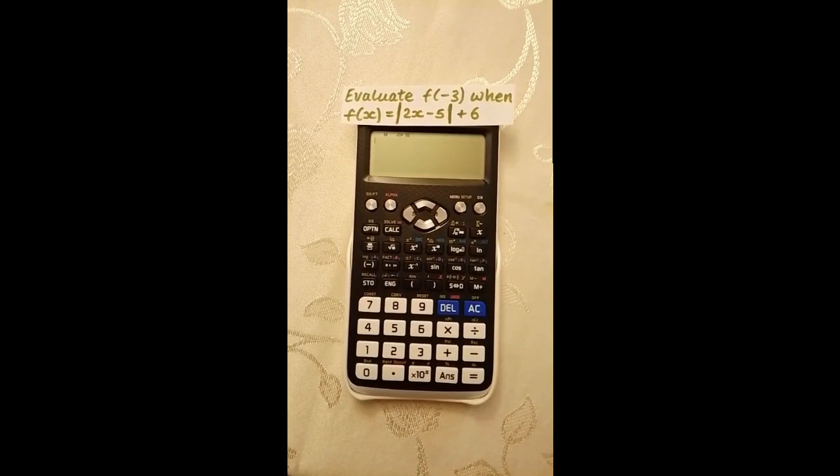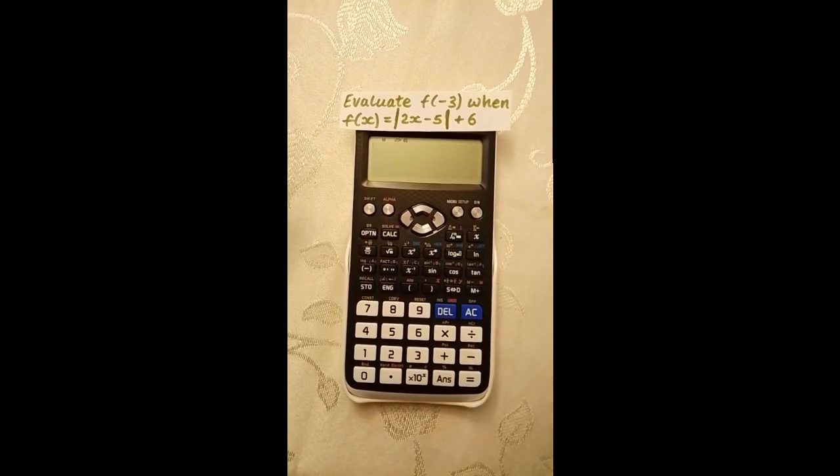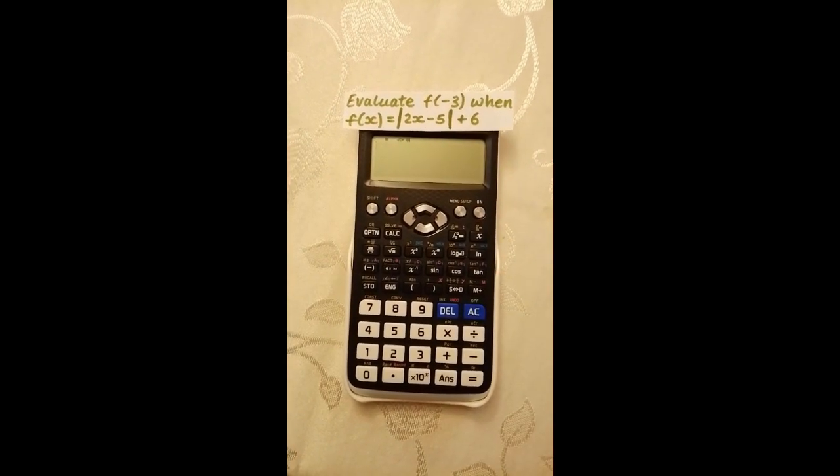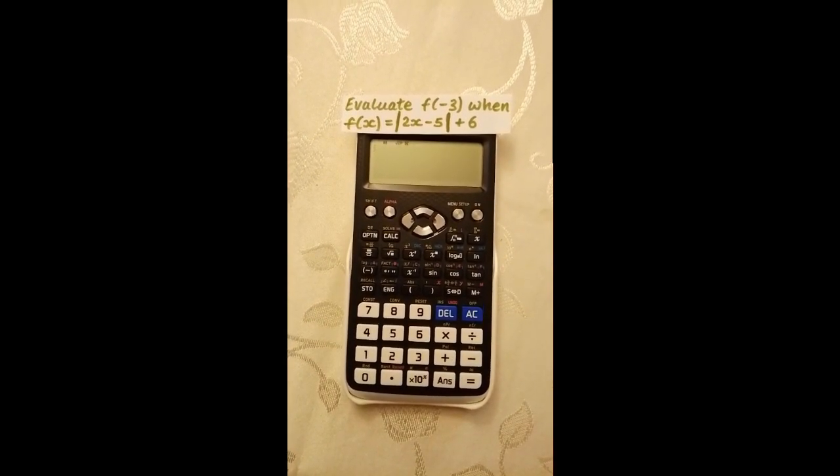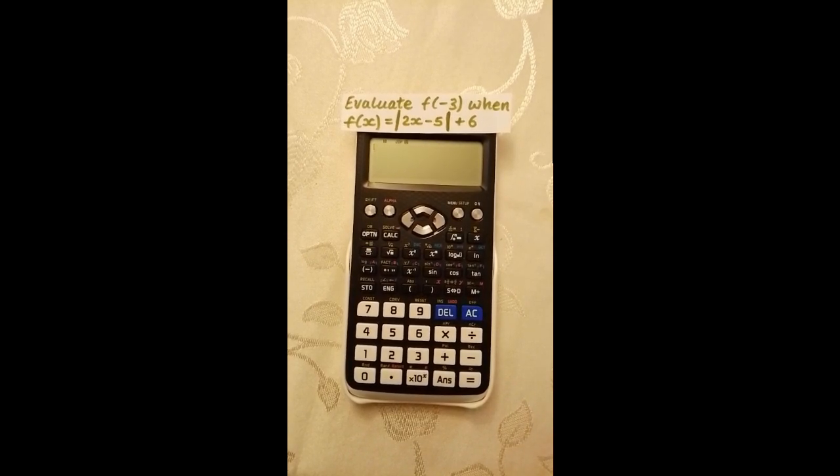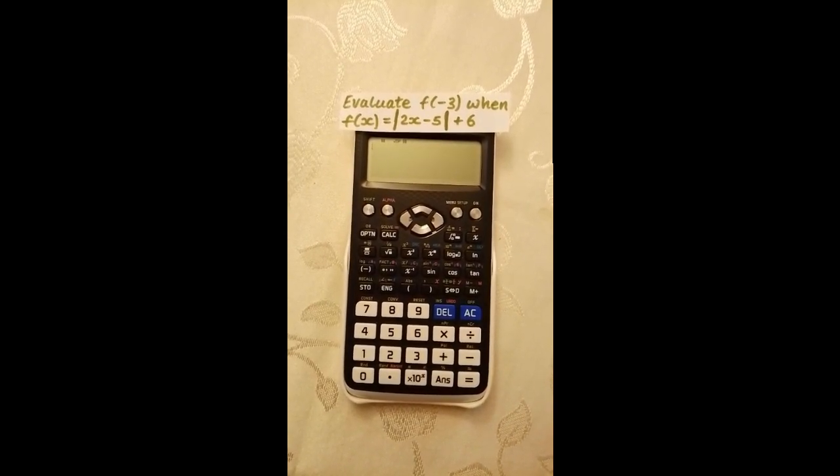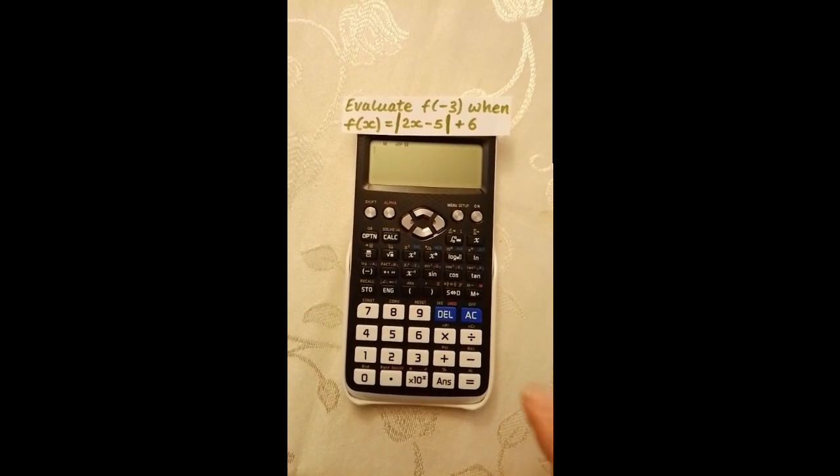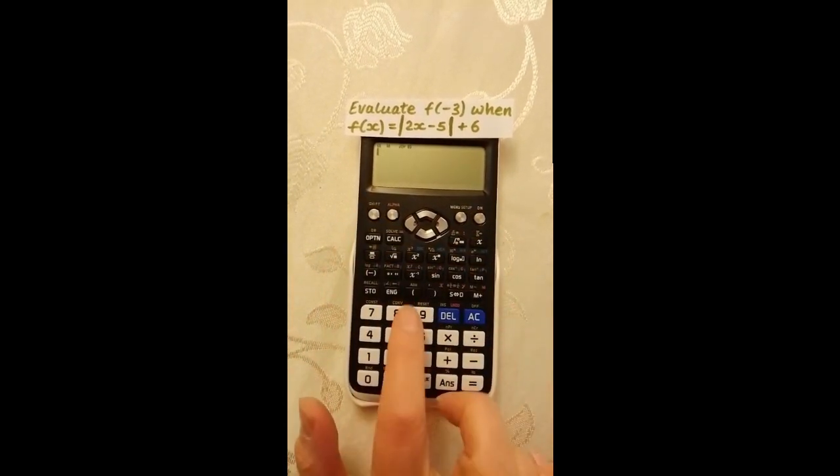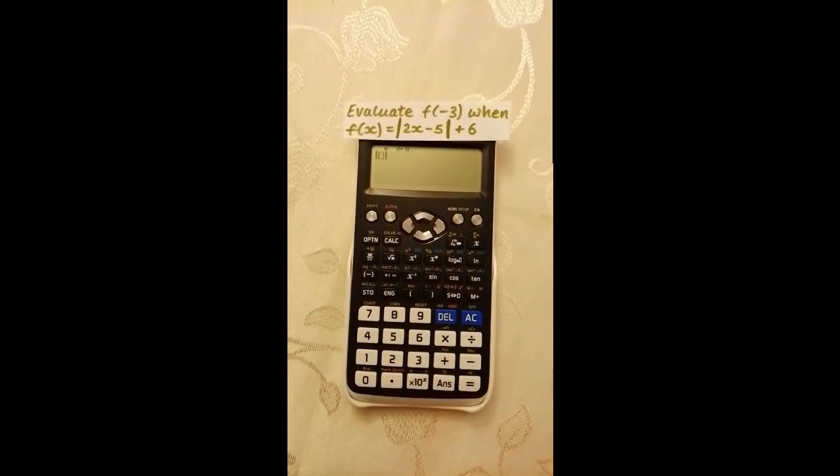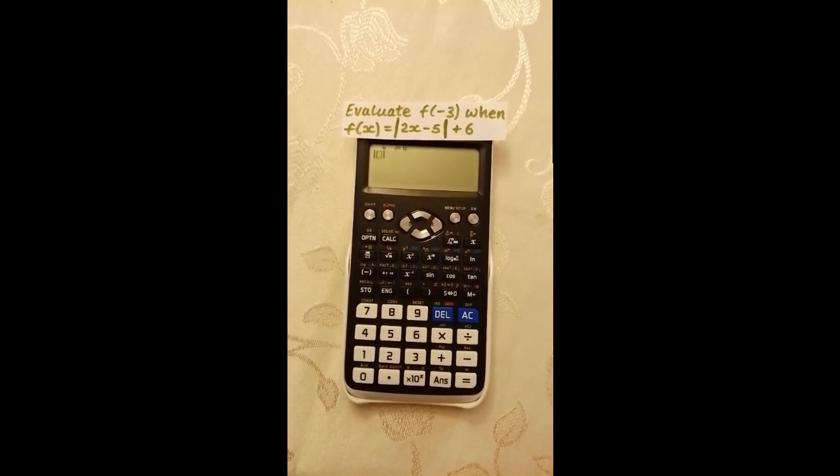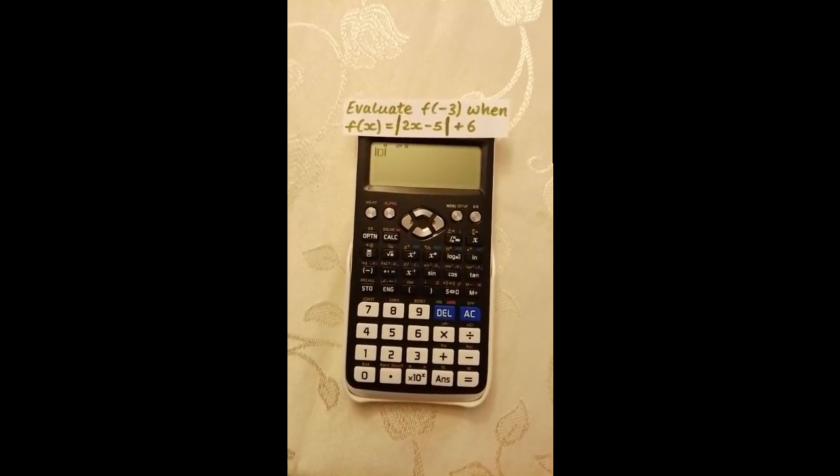In this video, we're going to find the value of this function when x equals negative 3. Using the calculator, we need to input the function with negative 3 substituted in for x. To do this, we press shift and then open brackets to access absolute value, which is another way to say modulus.